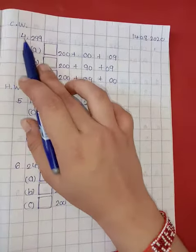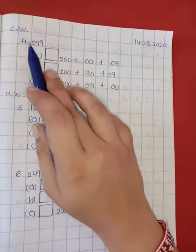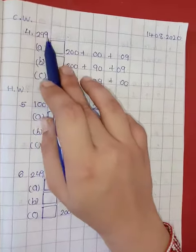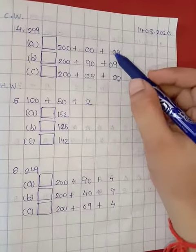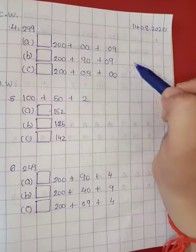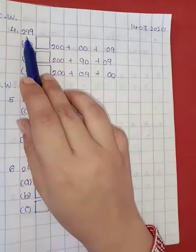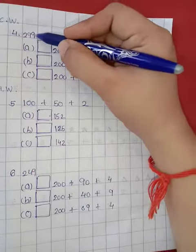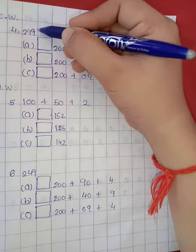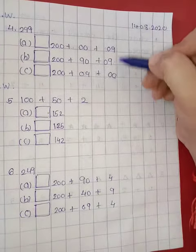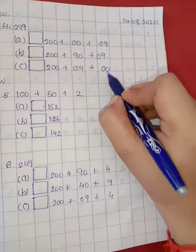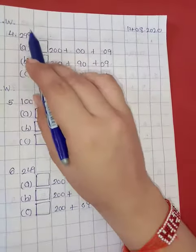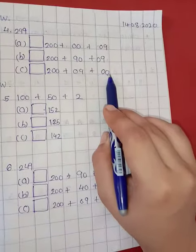Now number 4. 299, that is 299. Here one number is given and in the options you have the expanded form. You have to check which expanded form is correct. Here is 299, start from the ones place. Now 9 is on the ones place. Check where is the 9. Here is 9, and here is 00. So 9 is on the ones place. This option is not correct.